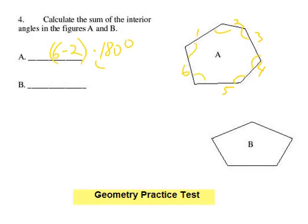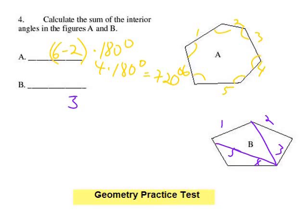These are easy if you want to know the sum of the interior angles of any figure: subtract two from the number of sides and multiply by 180. It's all on your cheat sheet. All you're really doing is counting how many triangles are in the shape — that's what happens when you subtract two.